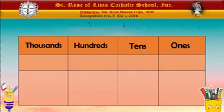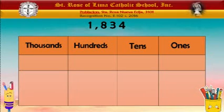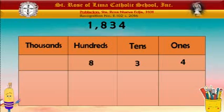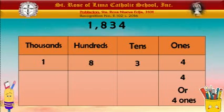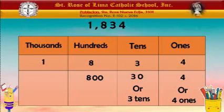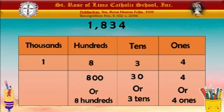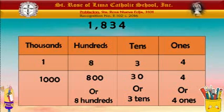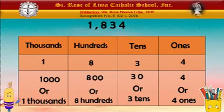Another example is 1,834. The 4 goes in the 1s, 3 in the tens, 8 in the hundreds, and 1 in the 1,000s. The value of 4 in 1,834 is 4, or 4 ones. The value of 3 in 1,834 is 30, or 3 tens. The value of 8 in 1,834 is 800, or 8 hundreds. And the value of 1 is 1,000. That is how we find the value of numbers using the place value chart.